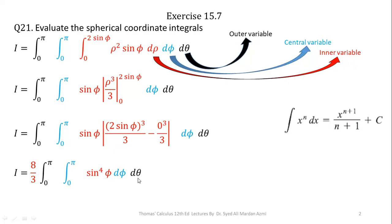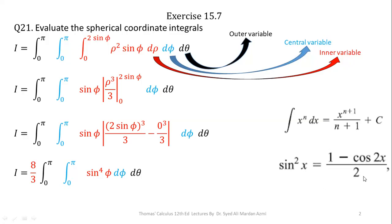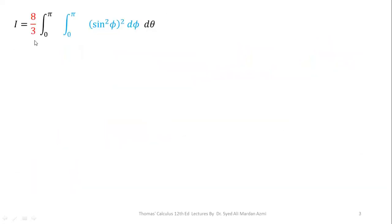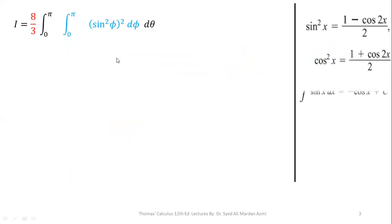Next, we will integrate sine raised to power 4 phi with respect to phi. Please note that in single variable calculus, we have learned that there is no direct formula for the integration of sine squared or its higher powers. So the process here is to convert sine to the power 4 into power 1 by using the identity: sine squared x equals 1 minus cos 2x over 2. We should have these formulas in mind before solving this question further.